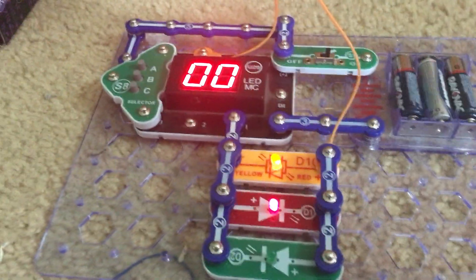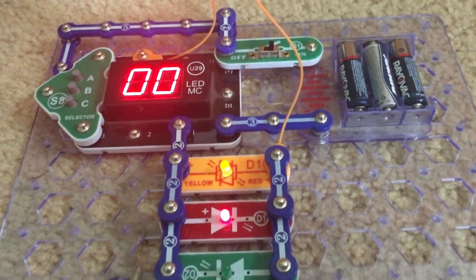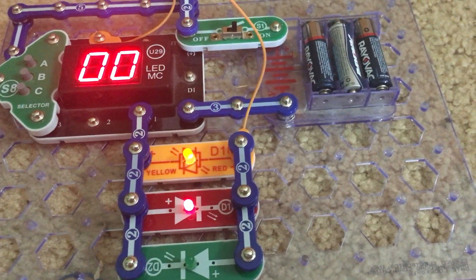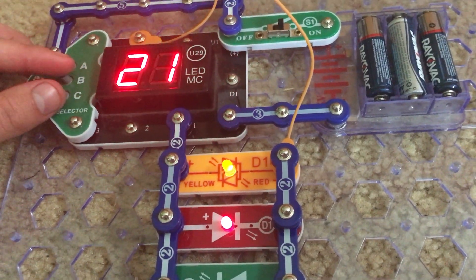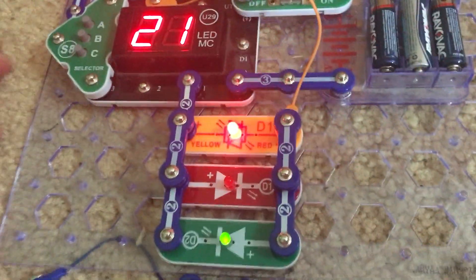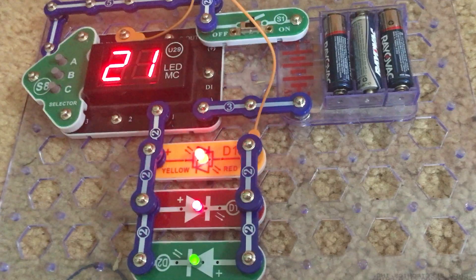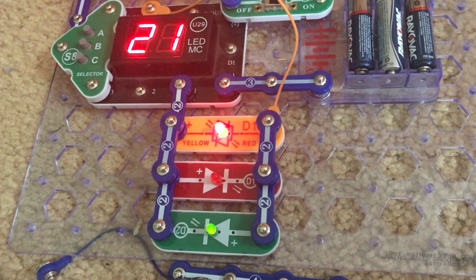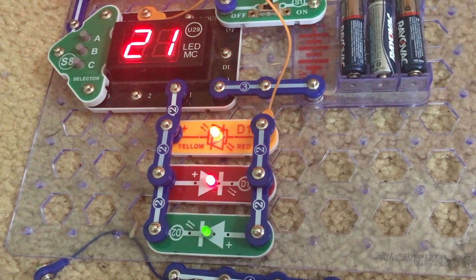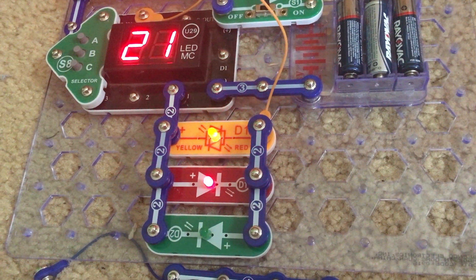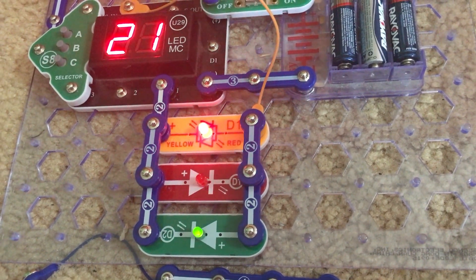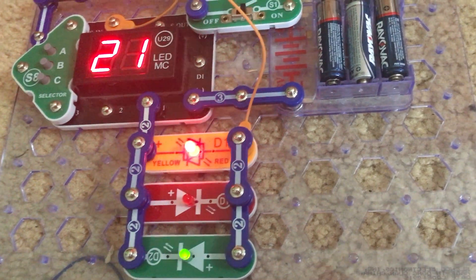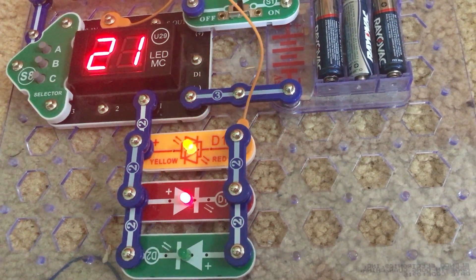Project 50 is dual bicolor light. We will select game 21 and push the B button. Look at that. The bicolor LED switches colors but also the red and green LEDs turn on and off as well at varying speeds.